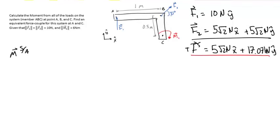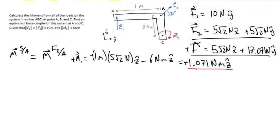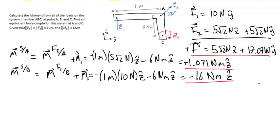To take the moments from the loads on the system about point A, we have the moment from force F2 at B about A, and the moment from M1. We find the moment from the loads on the system about A is 1.07 newton meters in the positive Z direction.